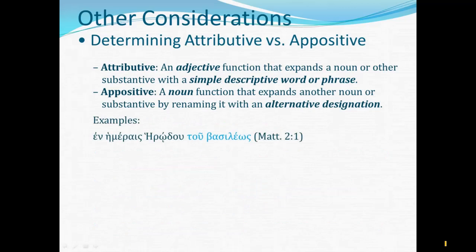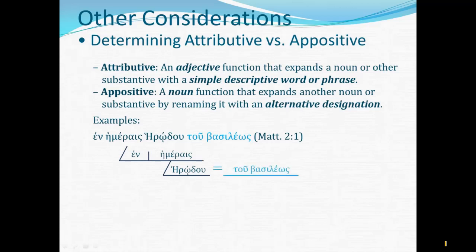Matthew 2.1 refers to 'the days of Herod the king.' Let's diagram 'in the days of Herod.' Now where will we put tou basileōs? Is that a modifier for Herod or an appositive renaming Herod? Starting with the mechanical guidance: is it a noun or an adjective? Basileōs is certainly a noun, and therefore it must be an appositive, because nouns do not modify other nouns attributively in Greek. We do have proper case agreement — both nouns in the genitive case. An attributive must agree in gender, number, case, and often determination, whereas an appositive is required to agree with the noun it renames only in case.